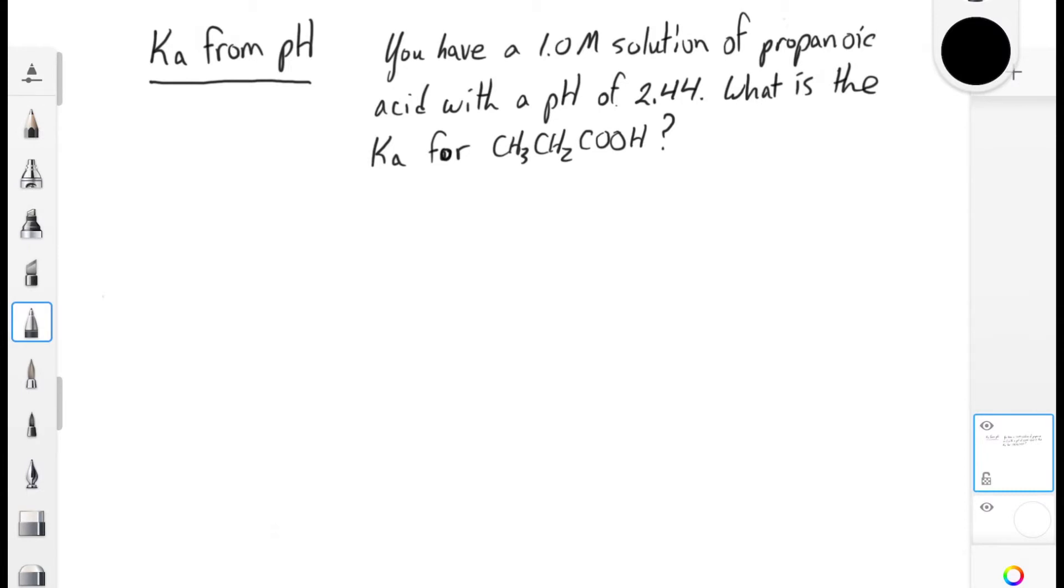In our second example, we'll be doing the same type of calculation, but in reverse. We're going to calculate a Ka from a pH and a concentration. So we have a 1 molar solution of propanoic acid that has a pH of 2.44. What is the Ka value for this acid?